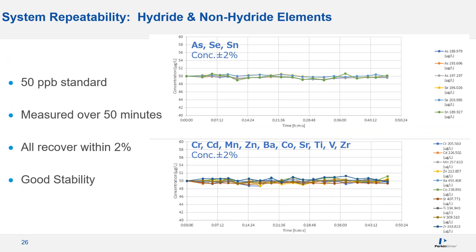For repeatability, a 50 ppb standard was measured over 50 minutes. Hydride elements — arsenic at multiple wavelengths, selenium at two wavelengths, and tin — all remained stable between 48 and 52 ppb. Non-hydride elements measured over the same period also stayed within ±2 ppb. This initial data shows the Hydromist system is working well for simultaneous hydride and aqueous analysis.